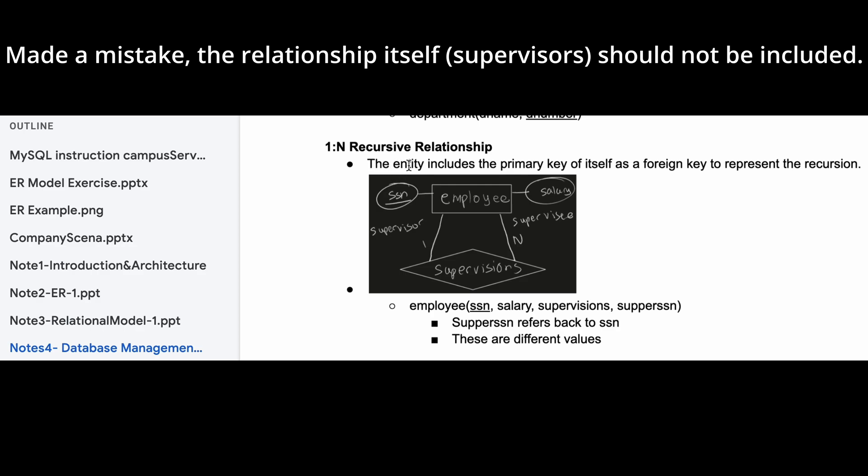A one-to-many recursive relationship is when the entity includes the primary key. So remember, employee for this example is the entity. The entity includes the primary key, like SSN, of itself as a foreign key to represent the recursion.